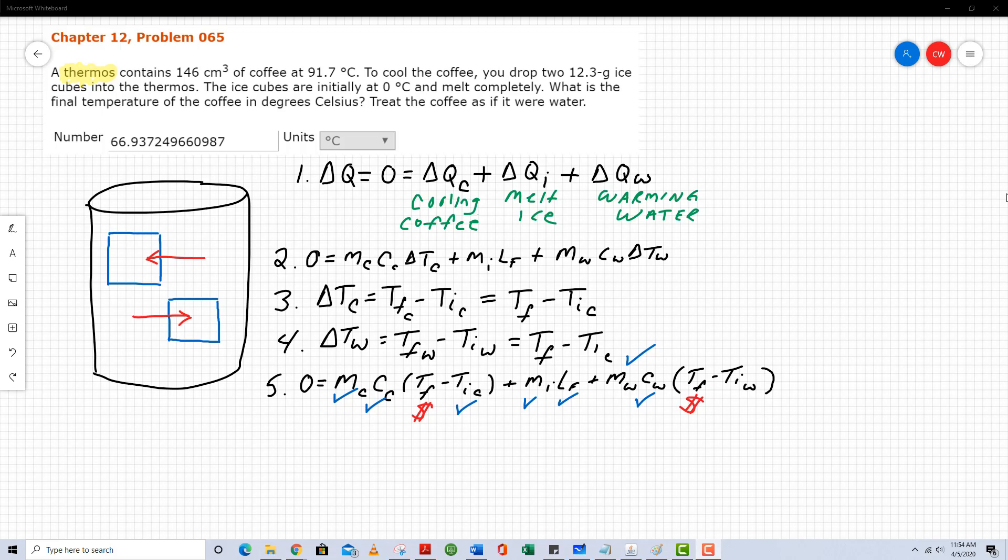The word thermos that you see highlighted here is a key term. Thermoses prevent any heat from escaping to the outside and they also prevent any heat from the outside from entering the system. Thermally insulating means whatever heat content is in the thermos remains unchanged. So ultimately, this is a conservation of heat energy problem.